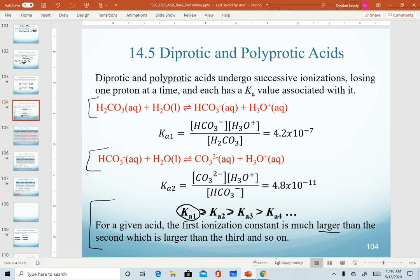In other words, this second equation is a much weaker acid than carbonic acid. We would produce much less hydronium from this second ionization.